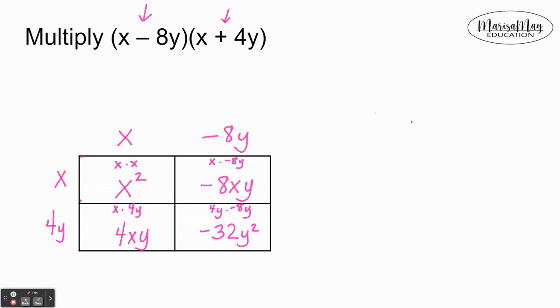We had x², minus 8xy, plus 4xy, and minus 32y². Notice that the like terms here—the terms with the same variable and exponent—are negative 8xy and positive 4xy. So x² and minus 32y² are going to stay the same.